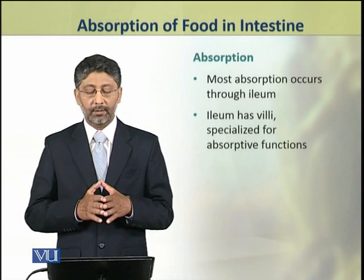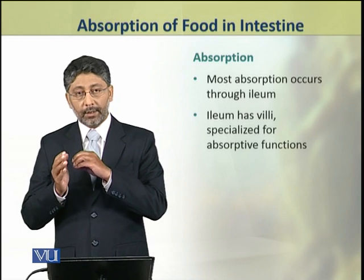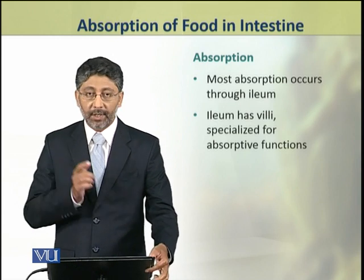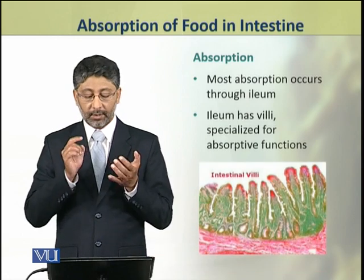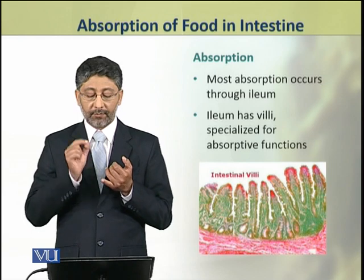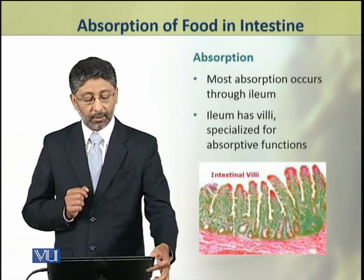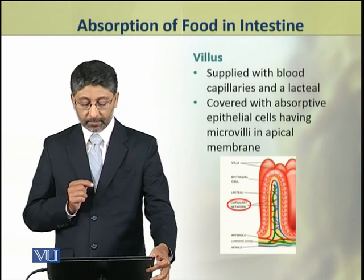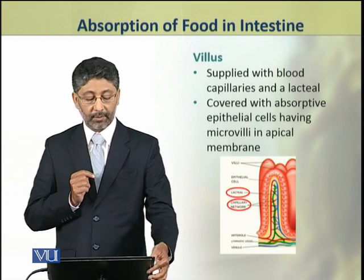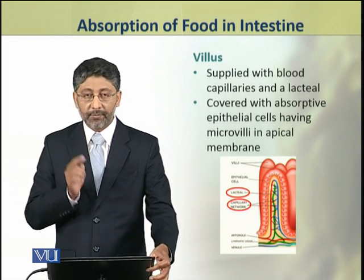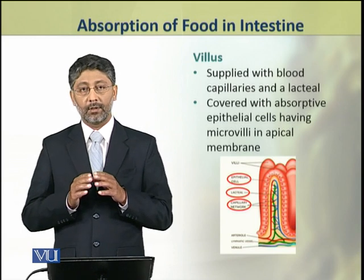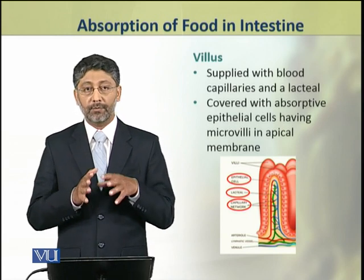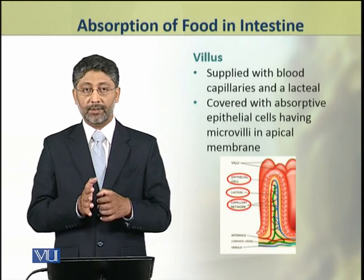Most of the absorption occurs through the ileum of the small intestine. The ileum has specific specialized structures which are villi, which are specialized for absorptive functions. Each villus is supplied with blood capillaries and a lacteal and is covered with absorptive epithelial cells. These epithelial cells have microvilli in their apical membrane. These features make villi the best absorptive structures in the ileum.